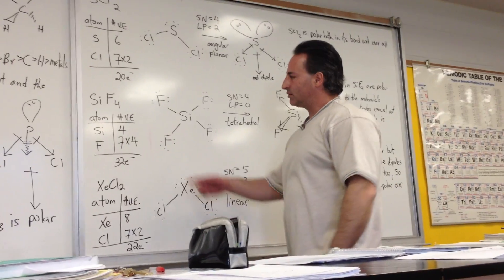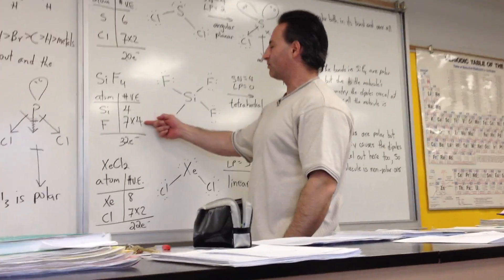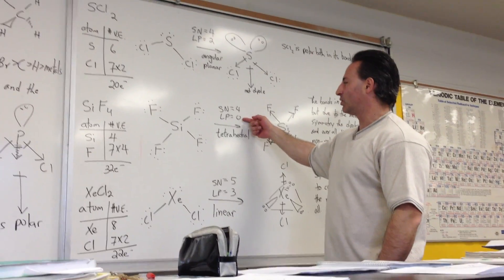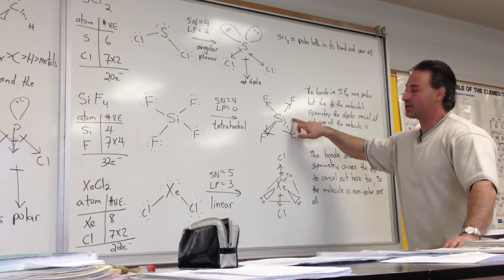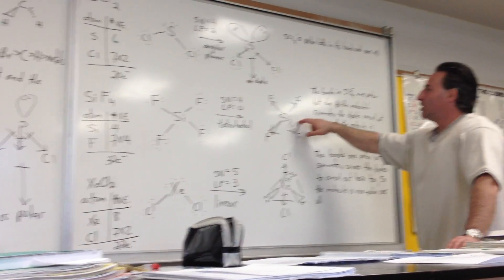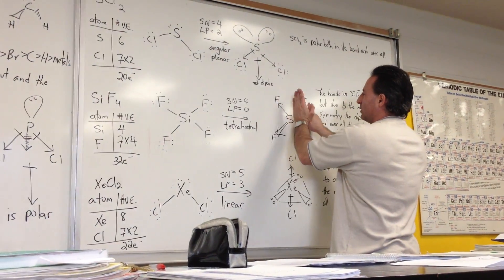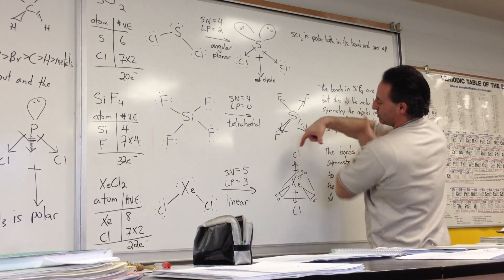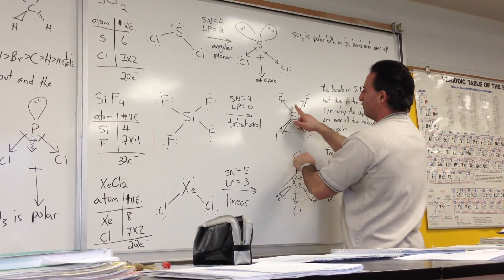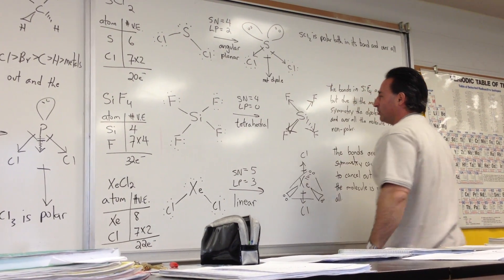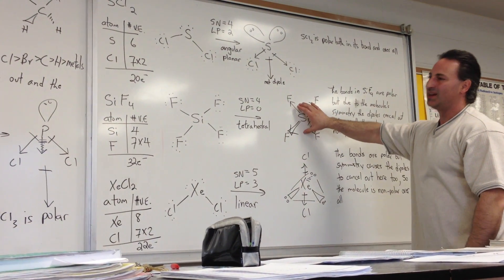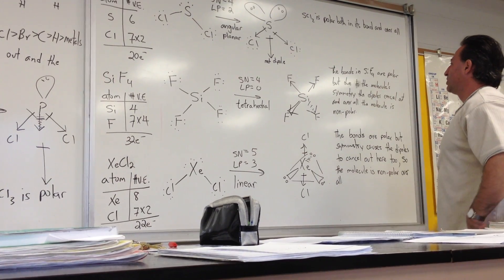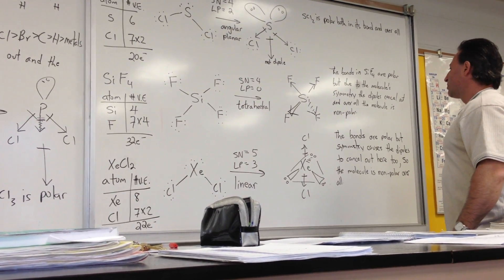Silicon tetrafluoride, SiF₄: silicon has four valence electrons, fluorine has seven, and with four fluorine atoms the total is 32 electrons. It looks like methane — same geometry. Steric number is four with no lone pairs, giving a tetrahedral shape. Because it's tetrahedral, it's symmetrical. The two upper dipoles have a resultant pointing up, and the two lower dipoles arranged at 90 degrees have a resultant pointing down, so the net dipole is zero. Although SiF₄ has polar bonds, it is non-polar because the symmetry causes the dipoles to cancel out.